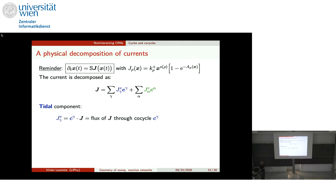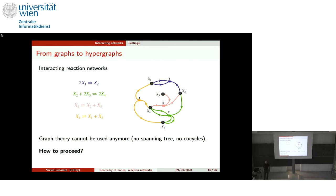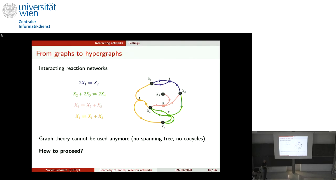One can also decompose the current into transient and stationary components using another basis, with stationary currents associated to cycles. Now let me move to the case of interacting systems, where species can group together to transform into other species. This is depicted by a hypergraph — to each reaction corresponds a hyper-edge, and different arrows show how the reaction involves the species.